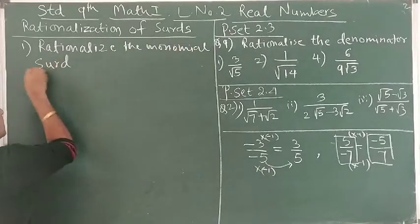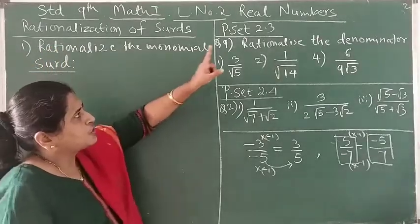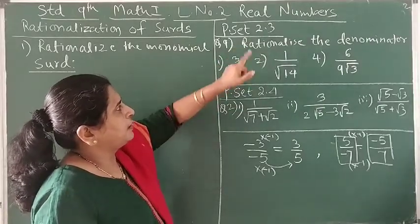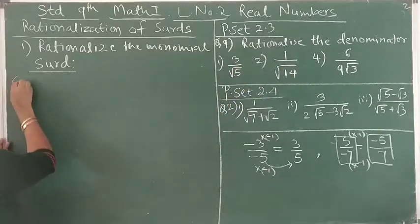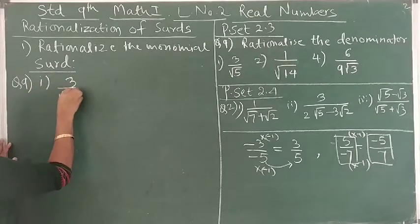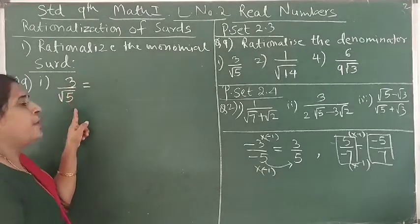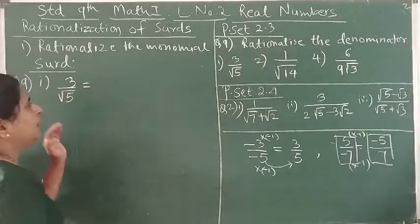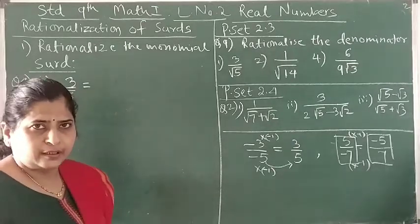What is the monomial surd? We are going to solve question number 9 from Practice Set 2.3 — rationalize the denominator. The first question is 3 upon square root of 5. We can see that the numerator is rational, but the denominator is irrational. To rationalize this monomial, we have to multiply by its rationalizing factor.